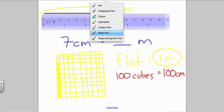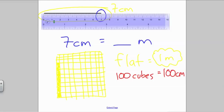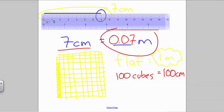We don't have an entire flat covered, so we know we have 0 wholes. We haven't used an entire long, an entire set of 10 cubes, so we don't have any tenths. But we do have 7 hundredths. We have 7 of the 100 filled in. So 7 centimeters equals 7 hundredths of a meter.